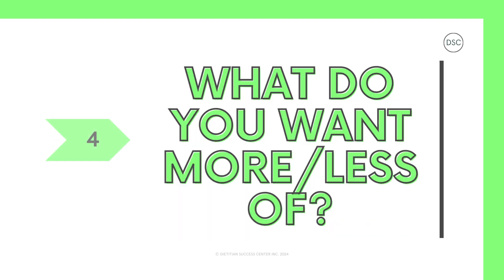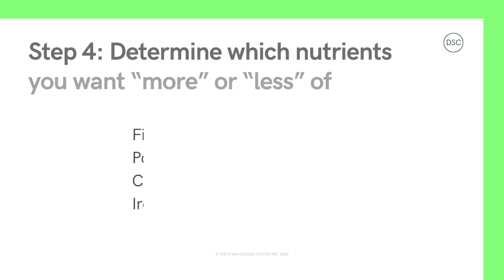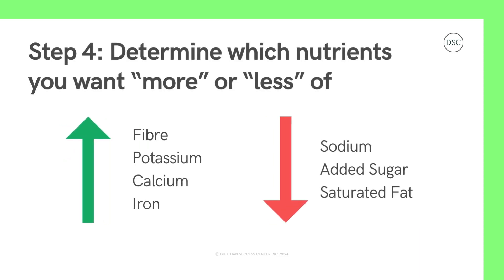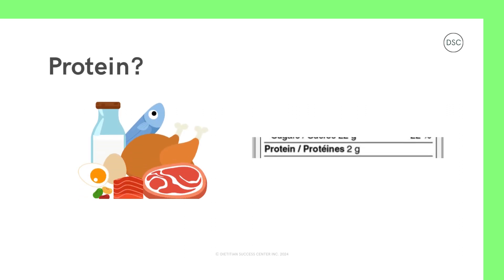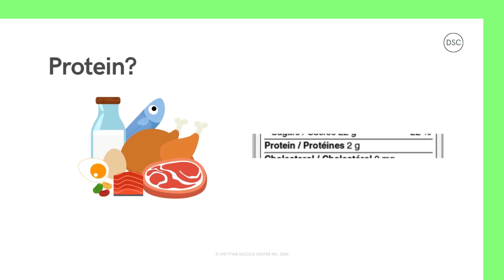This brings us to step number four: determine which nutrients you want more or less of. Though every person has unique nutrition goals, in general, unless told otherwise by your health care provider, most people will want to choose foods that are higher in fiber, potassium, calcium, and iron. And in general, most people will want to choose foods that are lower in sodium, added sugars, and saturated fat.